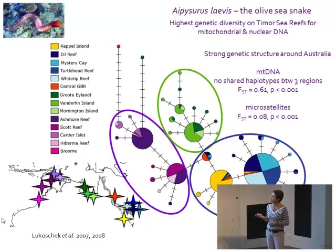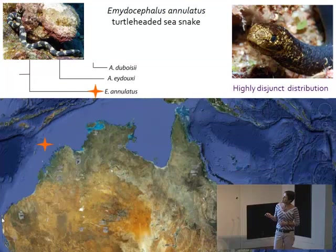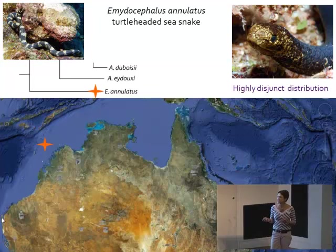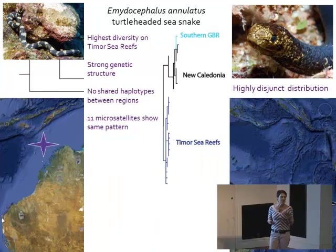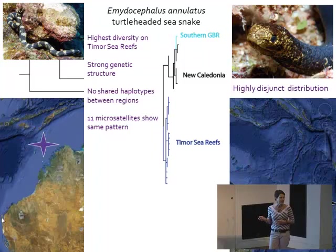Now looking at a different species — the turtle-headed sea snake, also the basal species in this group. Its known distribution up until recently was basically just on Timor Sea reefs, the Southern Great Barrier Reef, and New Caledonia. When you look at a tree of haplotypes, you get the same pattern as for the olive sea snake: highest genetic diversity on Timor Sea reefs, independent of sample sizes.